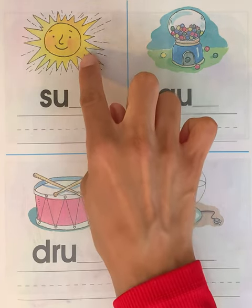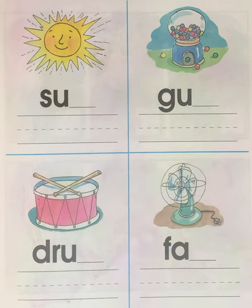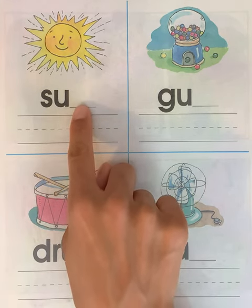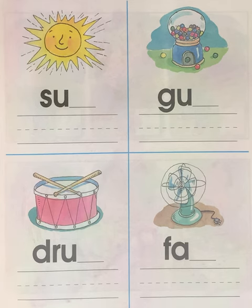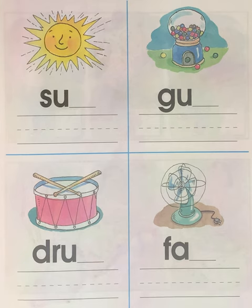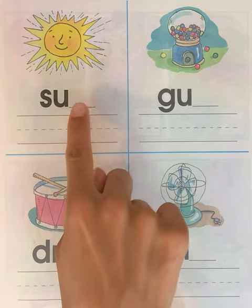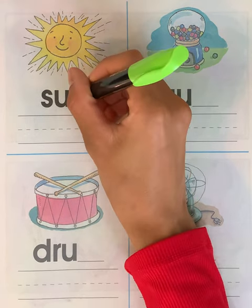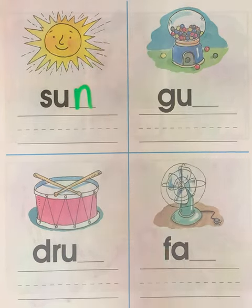This is a picture of a sun. Can you say the word sun? Sun. Now listen to that last sound, the ending sound. What sound do you hear? Do you hear M or do you hear N? Sun. Good. I hear N. Sun. The N sound.